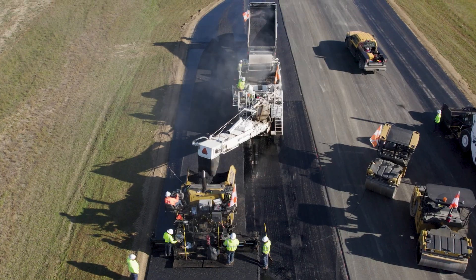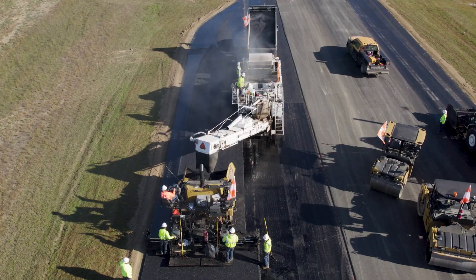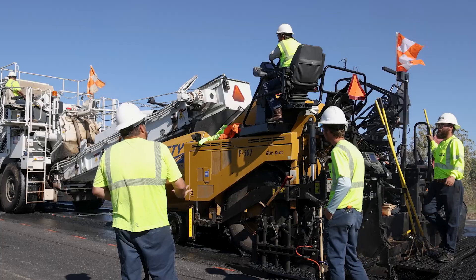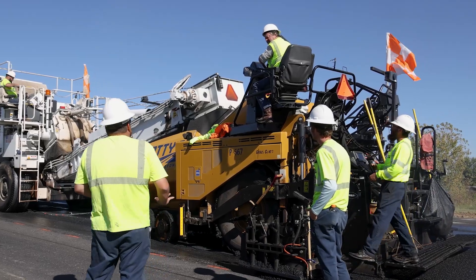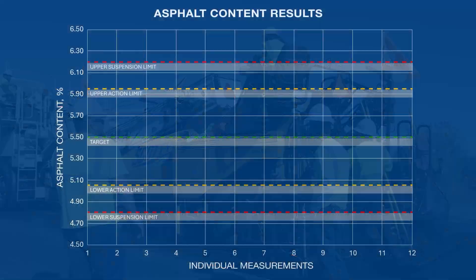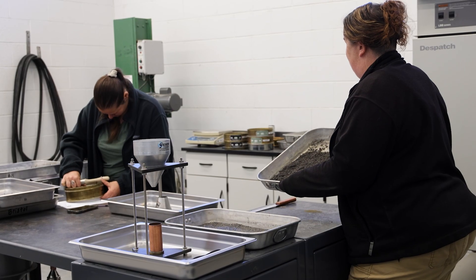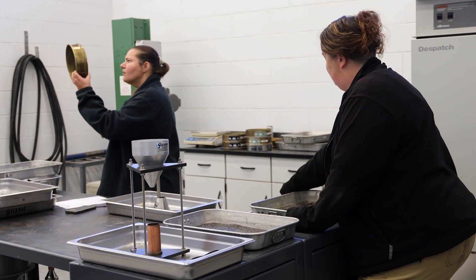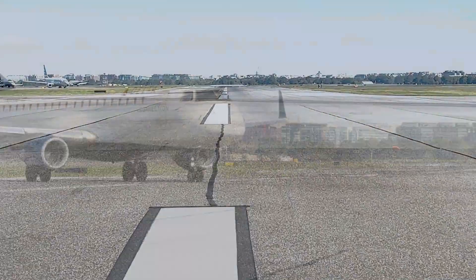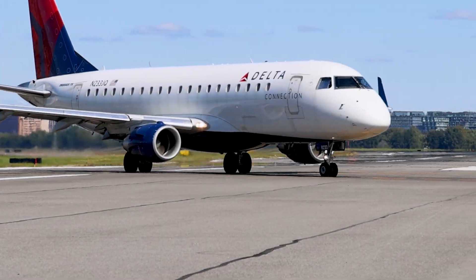During construction, contractors use control charts to monitor material quality and adjust processes to meet standards. For instance, a chart showing asphalt content from the ignition oven test might indicate variability if a lot falls outside specification limits, prompting further analysis. Quality assurance and control testing ensure airfield pavements meet the highest durability and performance standards.